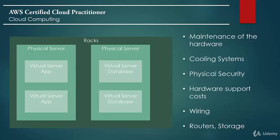Some of the overheads of having this kind of deployment included maintenance of the hardware. The physical server itself would reach end of life after some time, so you'd need to replace it periodically. Then there are cooling systems, physical security — meaning guards on duty to ensure the data center is safe — hardware support costs paid to vendors like IBM or HP, wiring, routers, and storage. There are many aspects to maintain in an on-premise environment.